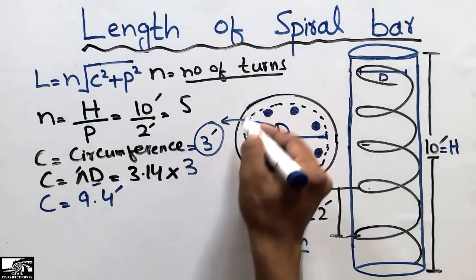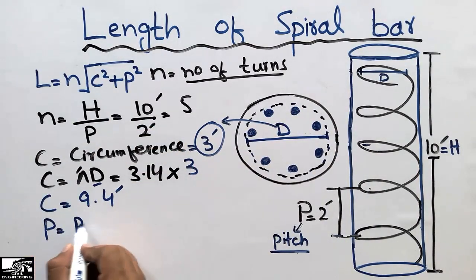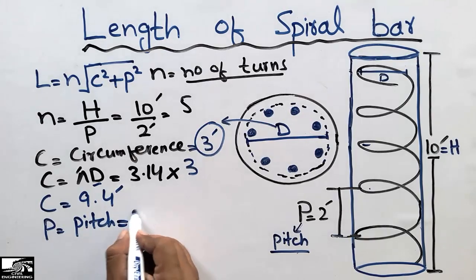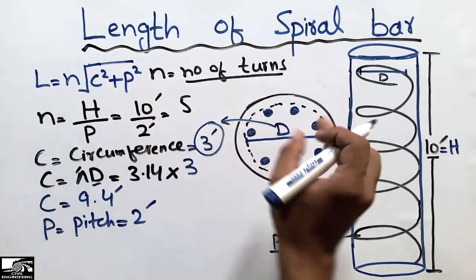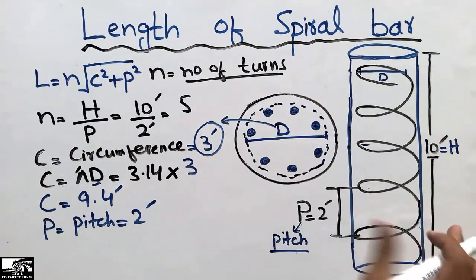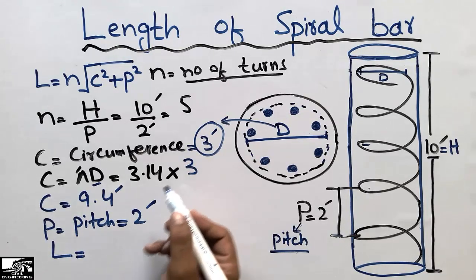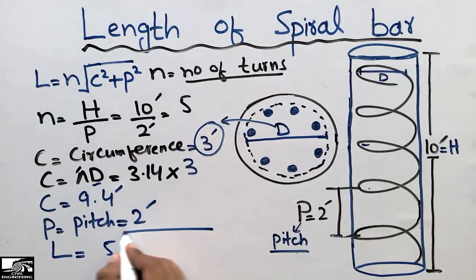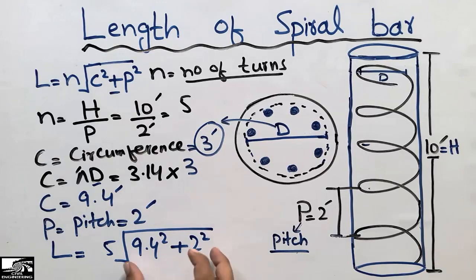P is the pitch, which I already told you is given as two feet in this case. So now all the values are known to us. Putting all values into the formula, we will get the length of the whole spiral used in this circular column. L equals n times the square root of C squared plus P squared. n is five, C is 9.4, and P is two.